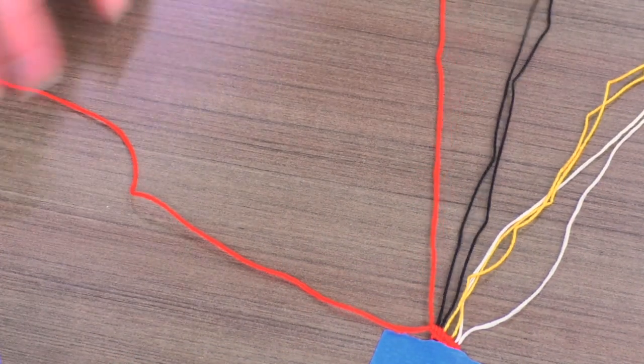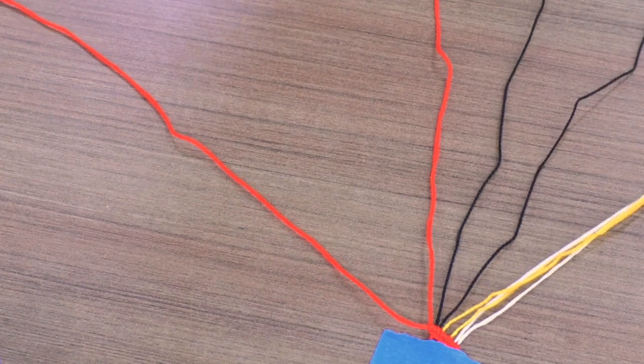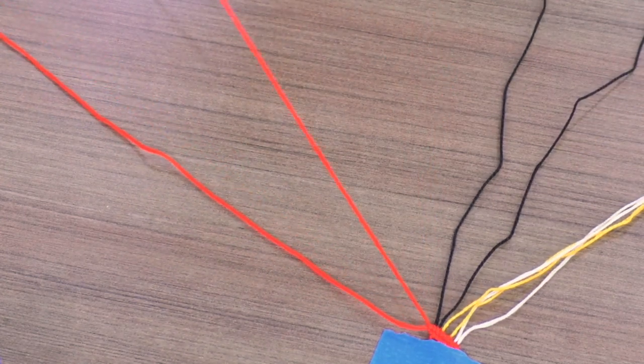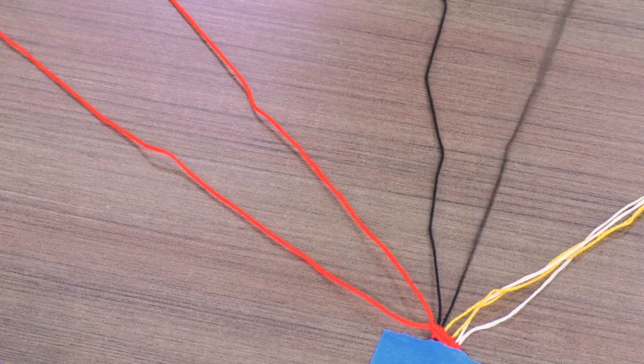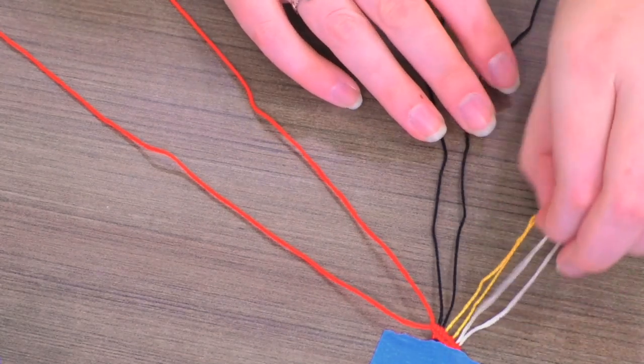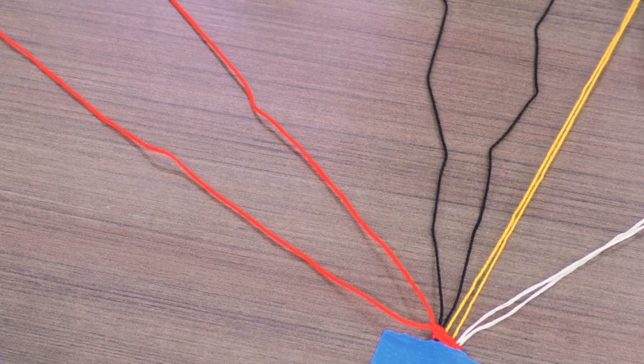Once you have your pieces all set up and tied in a knot, you want to separate your strings out so you can find them really easily and then go in the right order. You want to have at least six strings but you can always do more.